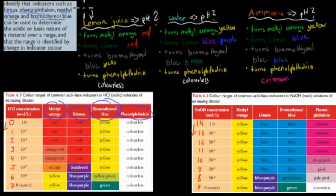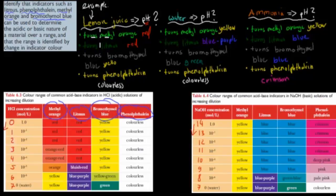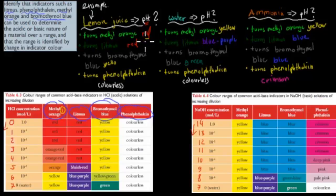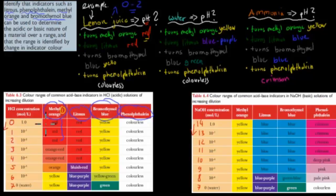Let's say we have lemon juice and we want to figure out what pH it has without a pH meter. Using methyl orange — the first indicator — we dunk it into lemon juice and it turns red. This means the pH is somewhere in the range of 0 to 2, because all readings in that range turn methyl orange red.